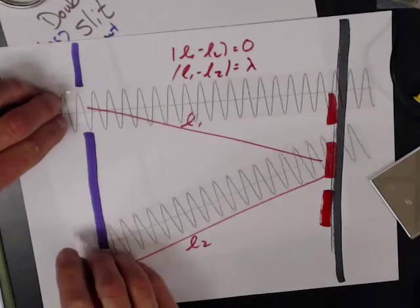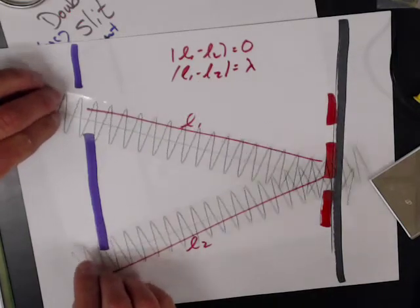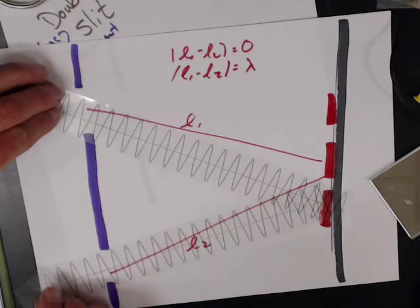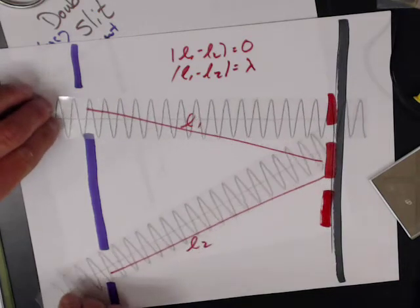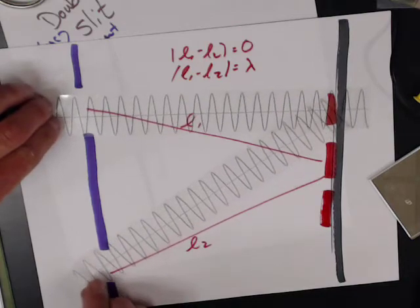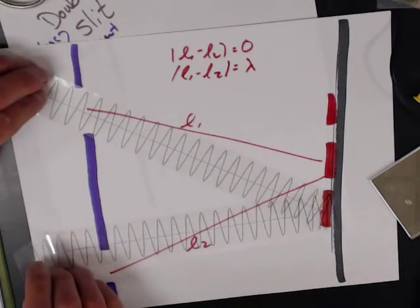So it works really well here. So your L1 is longer than L2. L1 is longer by one wavelength. Now over here, L2 is longer by one wavelength.